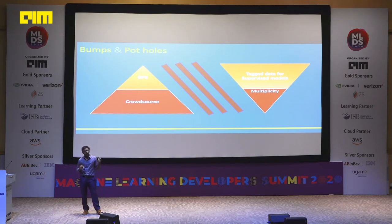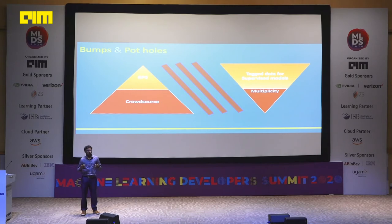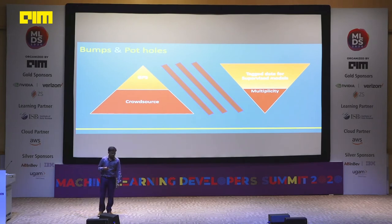The second limitation was crowdsourcing. Since we relied on crowdsourcing, if a vehicle had only run over a pothole or speed breaker once with not much other traffic going over that road, it was difficult for us to mark those spots reliably. This is one of the key limitations of our approach, along with some technical limitations.